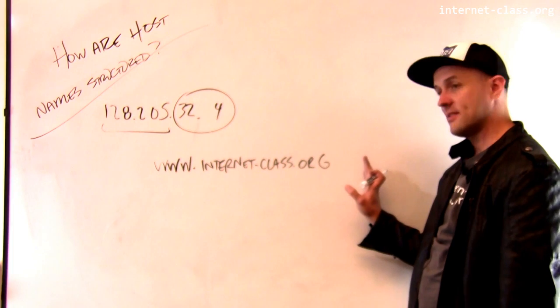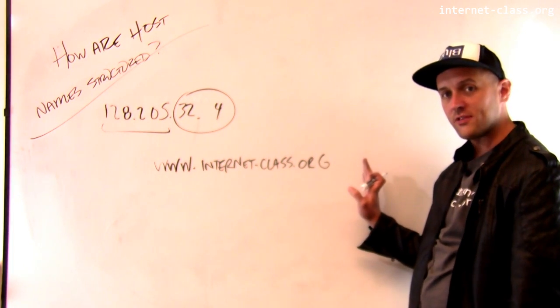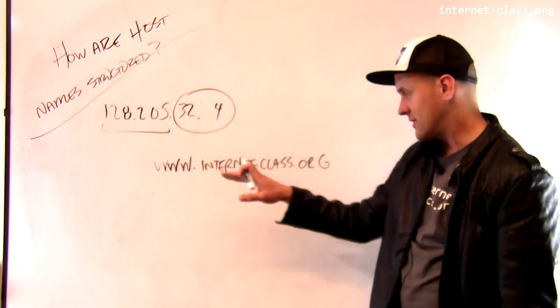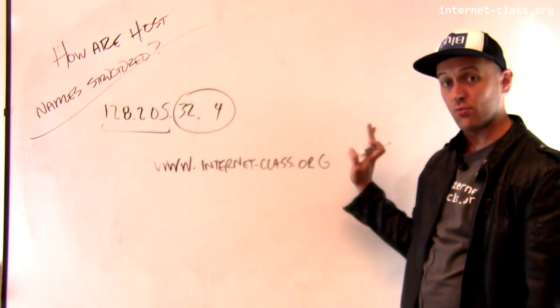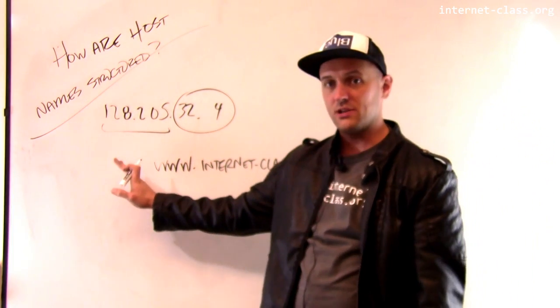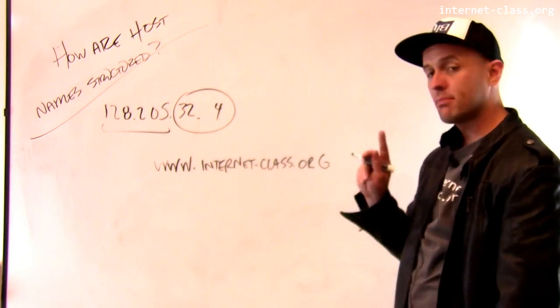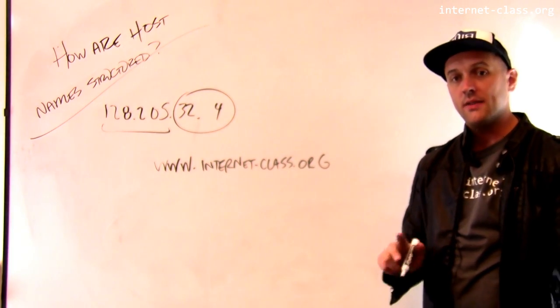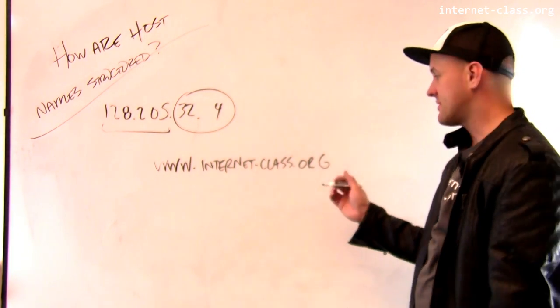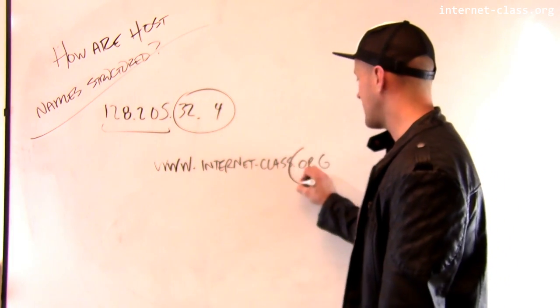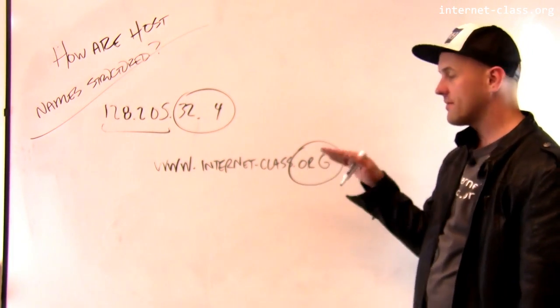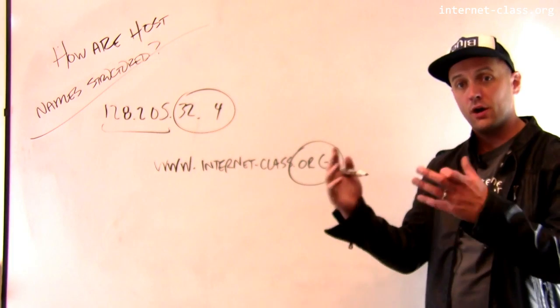Now, the difference is that with a domain name or a host name, I go in the other direction. So the most general information is over here on the right, and more specific information is over here on the left. For example, when I purchased this domain name, the entity that I purchased it from had to register it with an organization that maintains all of the .org host names.